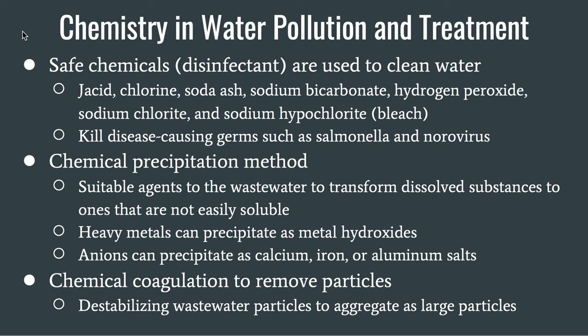The chemical precipitation method uses suitable agents in wastewater to transform dissolved substances into ones that are not easily soluble. Heavy metals can precipitate as metal hydroxides. Adions can precipitate as calcium, iron, or aluminum salts.